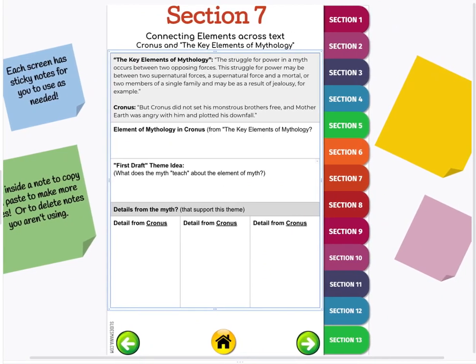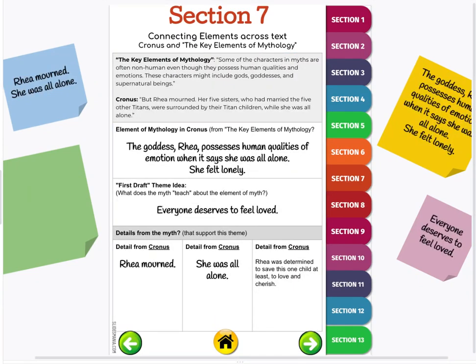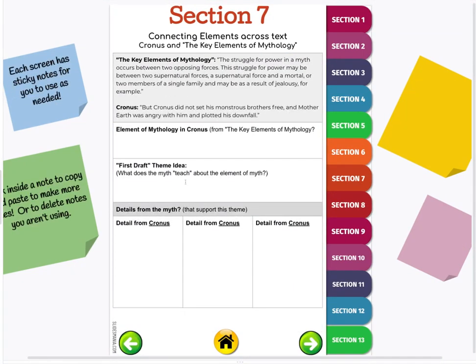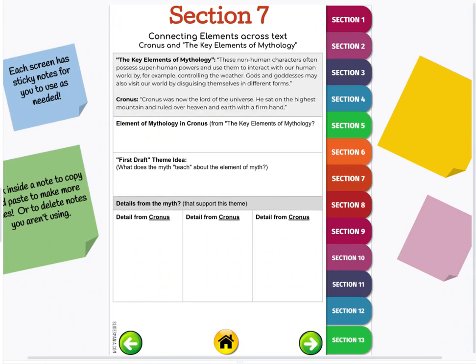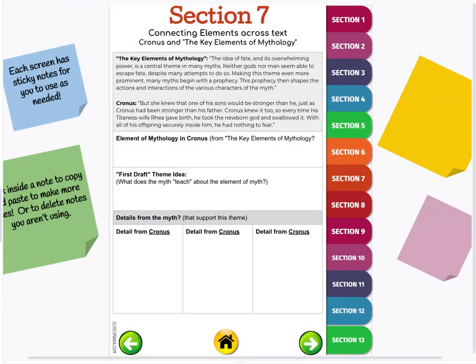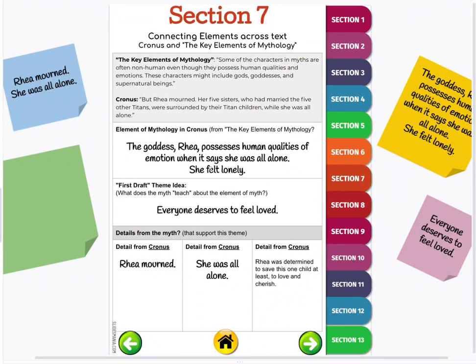What details from Cronus, this passage or the whole myth, help support that. This one is probably going to be different than the last one that said everyone deserves to be loved. You're going to do that for page twenty-one in your interactive journal, you're going to do page twenty-two and page twenty-three. I'm going to leave page twenty already done for you so you can use that as a guide. If you have questions please ask your teacher.